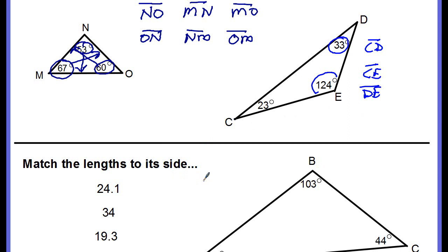Now we're going to match the lengths to its side — basically doing the same thing, except you're going to write the lengths on the model. The largest angle is 103 degrees. The side opposite angle B is side AC. When you write the length, you write it on the side — just like this. A lot of students write it right next to the letters, but we're identifying the side, so it goes on the side, not by an angle.